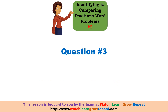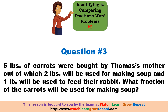Question number three: Five pounds of carrots were bought by Thomas's mom, out of which she used two pounds for making soup and one pound will be used to feed their rabbit. What fraction of the carrots will be used for making soup?